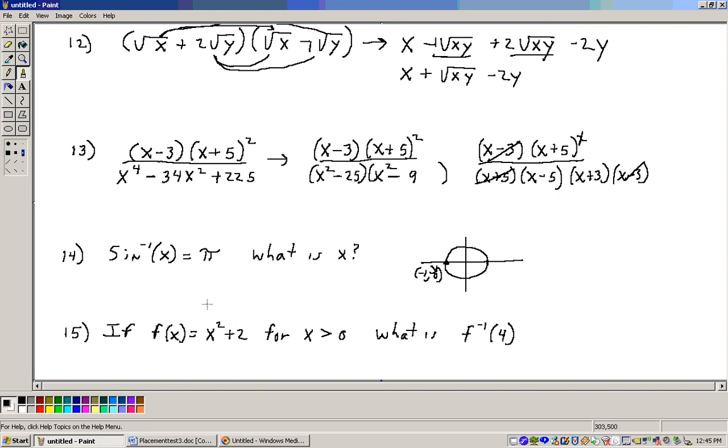Let's go to 15. 15 says, if f of x equals x squared plus 2 for x greater than 0, what is f inverse of 4? Well, the inverse function, for this x value of 4, the original function will have a y value of 4.